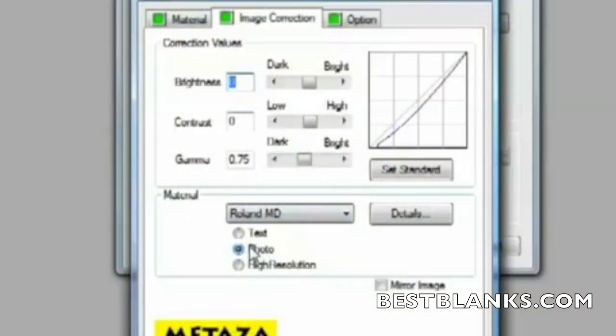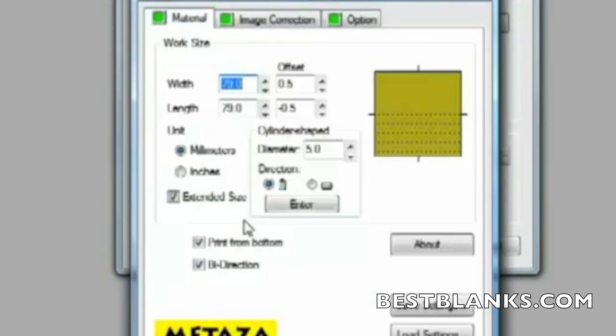Click on print and verify your print properties. Now you're ready to output the file to the MPX80.